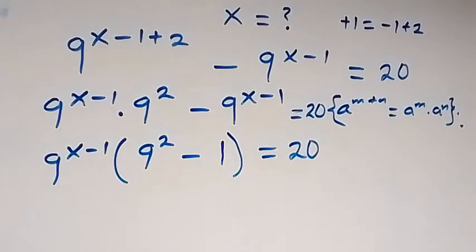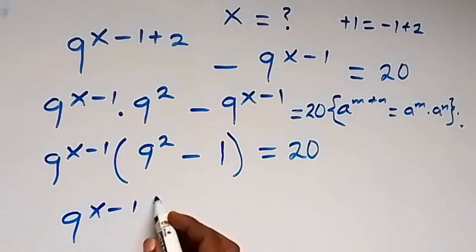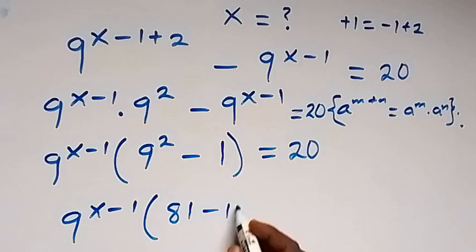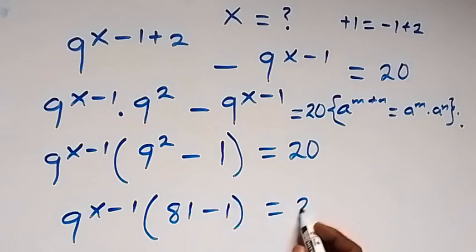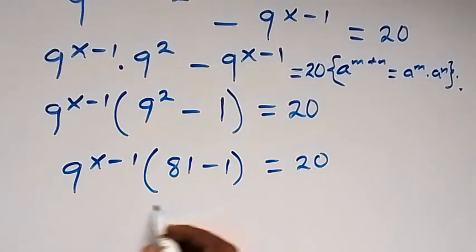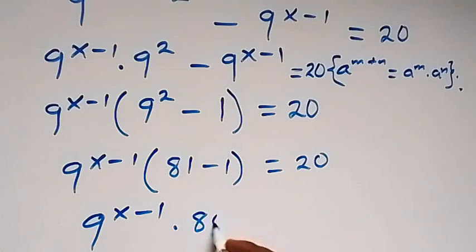Then we can write this out: 9 raised to the power x minus 1, into bracket — 9 squared is 81 — then minus 1 equals 20. Then 81 minus 1 is 80, so we have 9 raised to the power x minus 1 times 80, now equals 20.